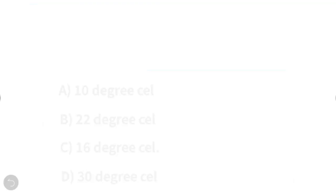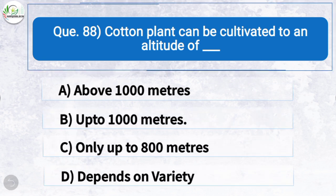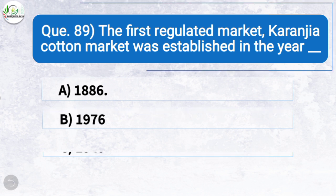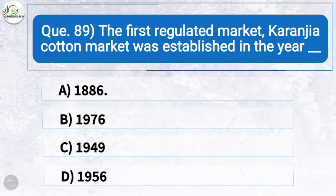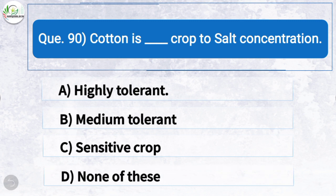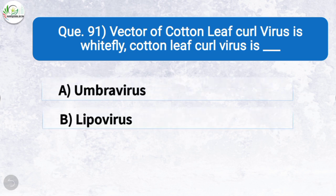Question eighty-eight: Cotton plant can be cultivated to an altitude of — the correct answer is option B: up to 1000 meters. Question eighty-nine: The first regulated market, Karanja cotton market, was established in the year — the correct answer is option A: 1886. Question ninety: Cotton is — the correct answer is option A: highly tolerant to salt concentration. Vector of cotton leaf curl virus is whitefly.